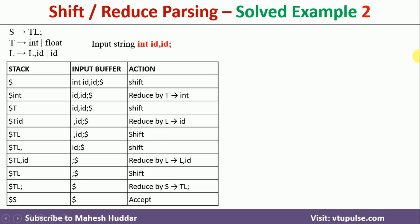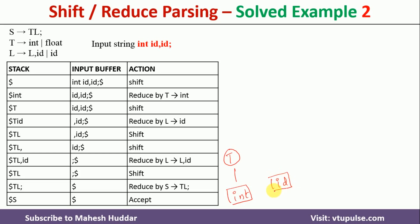Now we will try to draw the parse tree. As mentioned earlier, we need to start from the leaf nodes. We start from the first shift: 'int' is shifted onto the stack — that is a terminal node, so I will create a node 'int' in a square box. Then 'int' is reduced to T, so we write T as a non-terminal node in a circle. After that, 'id' is shifted onto the stack top — it is a terminal node, so I put it in a square. This 'id' is reduced to L, which is a non-terminal node, so I create that node and connect id to L.